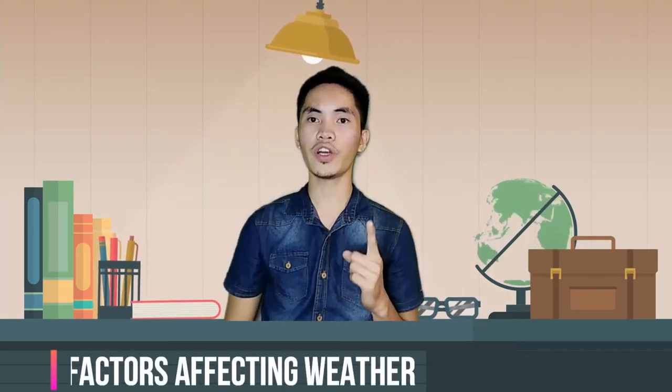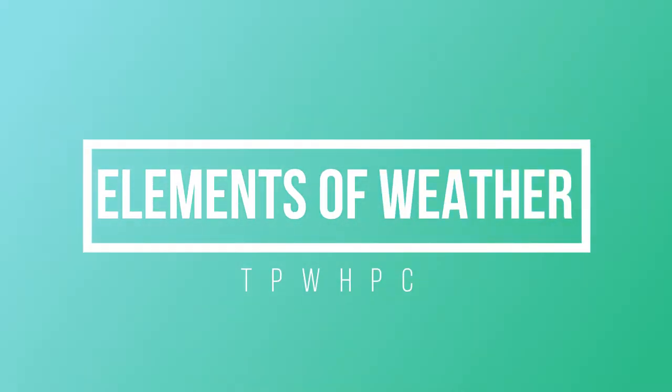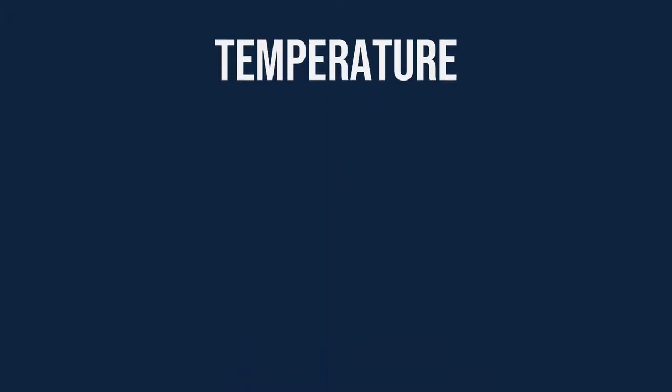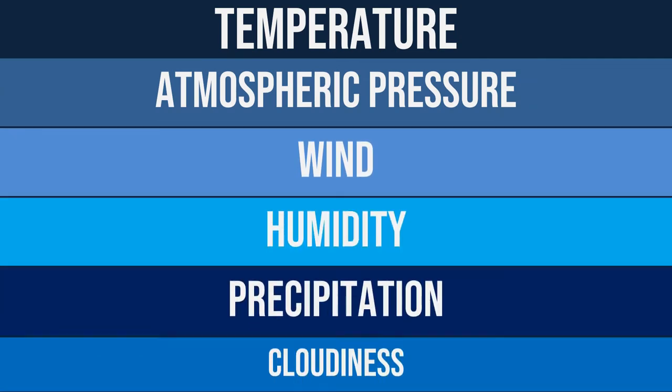Even though there is only one atmosphere on Earth, the weather is not the same all over the world. There are different factors — or should we say elements — that could change the atmosphere from a certain area and together they determine what the weather looks like from one minute and from one place to the next. These elements include temperature, atmospheric pressure, wind, humidity, precipitation, and cloudiness.